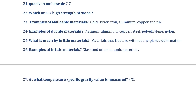Examples of malleable materials: gold is the most malleable material. Other examples include silver, iron, aluminium, copper, and tin. Gold is exceptionally the most malleable of all these materials.